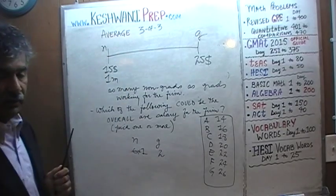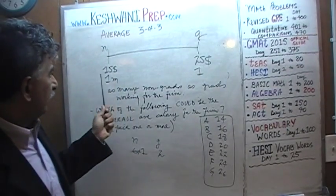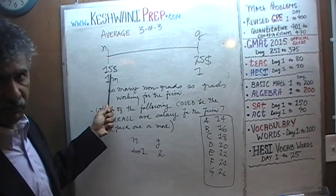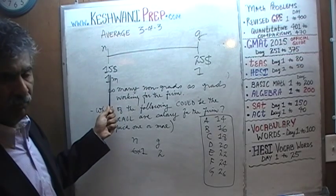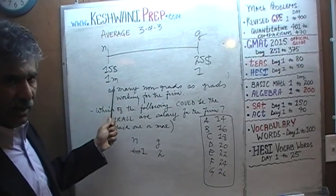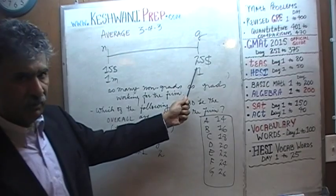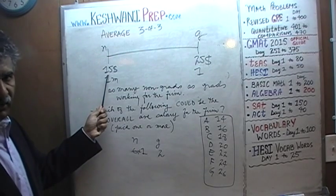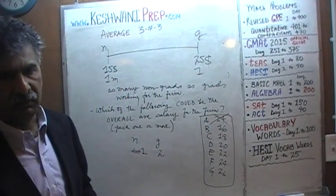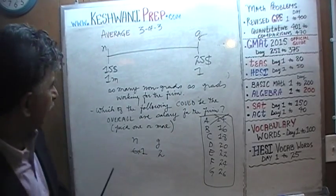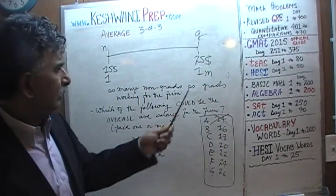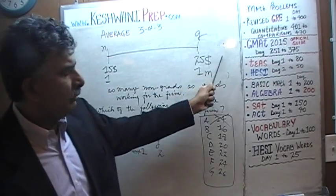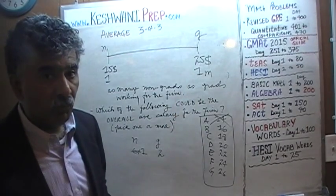As long as we have at least one person earning more than $15,000, the overall average will be more than $15,000 — it cannot be equal to or less than $15,000. So any answer choice that is $15,000 or below is wrong; $14,000 is nonsensical. Similarly, if we had only one non-graduate and a million college graduates, the overall average could be very close to $25,000, but it cannot be $25,000 or above. So any answer choice that is $25,000 or more is also nonsensical.